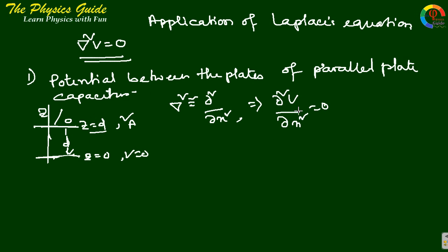So just integrate this. For the first integration, del V del z gives a constant c. We are using the z coordinate, so del squared V del z squared equals to 0. First integration gives del V del z equals to some constant c1.